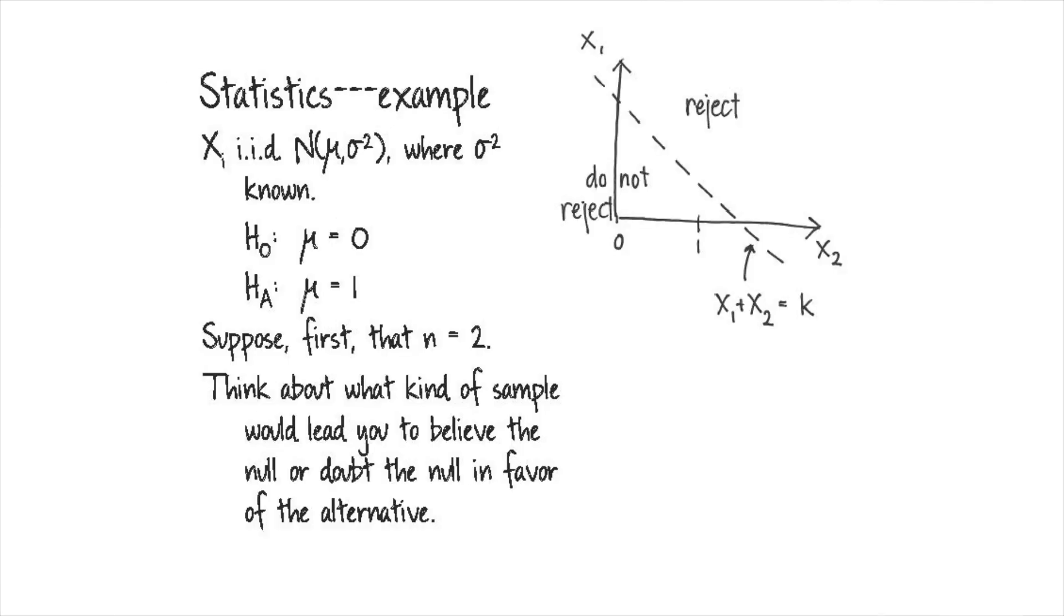Basically, it's going to look like this. We're going to draw a diagonal line which is equal to X1. The line is X1 plus X2 equals some value K. We haven't specified what K is yet. And everything, if our sample falls above that line or to the northeast of that line, we're going to want to reject the null. That just means that our two observations are kind of large. So that's going to tell us they probably didn't come from a mu equals zero distribution. And anything below that line, we're going to want to accept the null, because those are pretty small values and it probably didn't come from a mu equals one distribution.